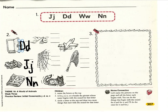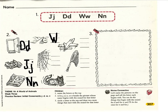Next picture. Wave. What sound do you hear at the beginning of wave? I hear the sound W. What letter makes the sound W? W says W. Please write a capital W and a lowercase w on the handwriting line. Make sure the capital W reaches all the way from the hat to the shoe.